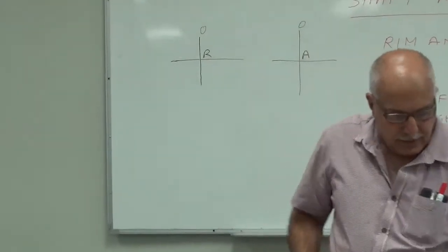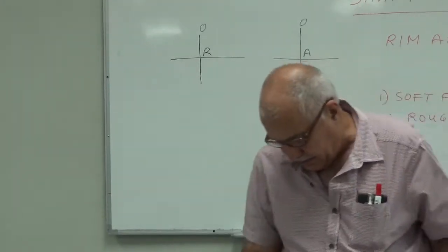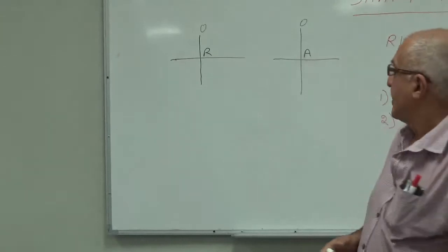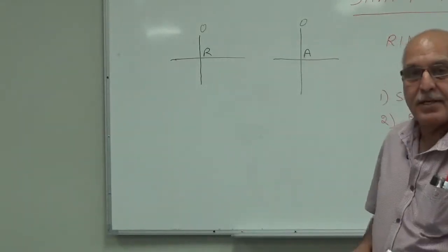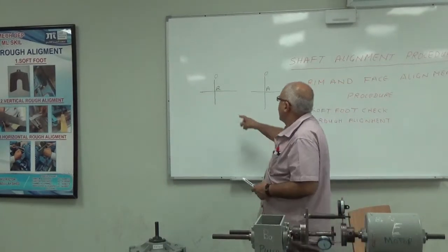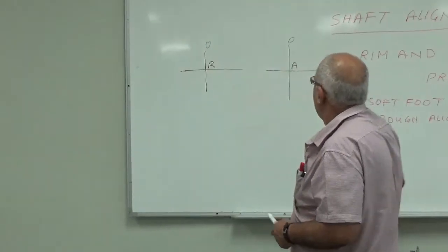So this method which we are using is called the rim and face method. The reading which we will take on the rim side I write here as R, and the